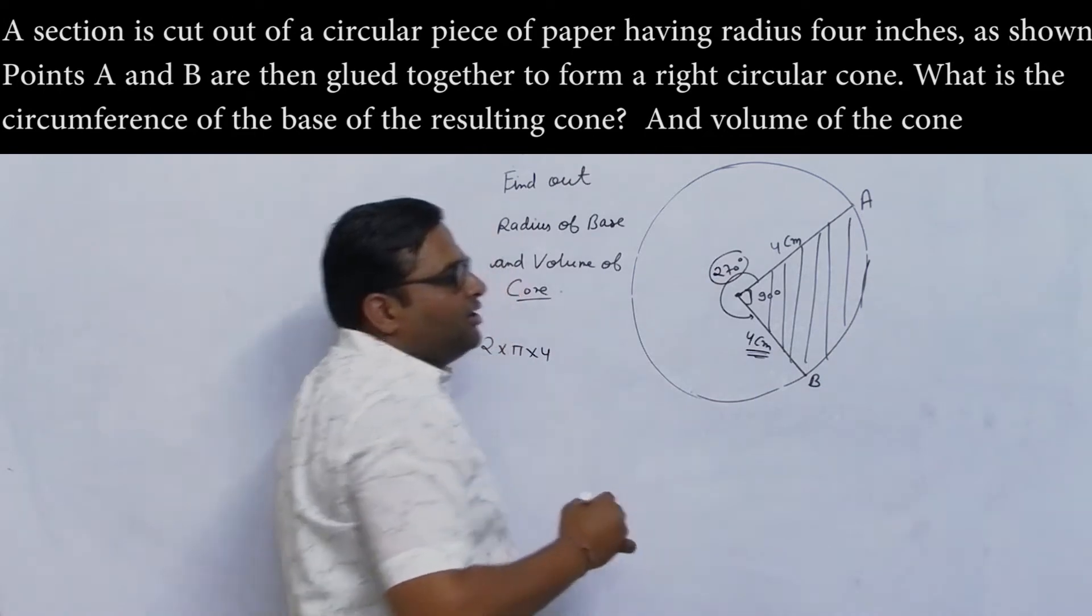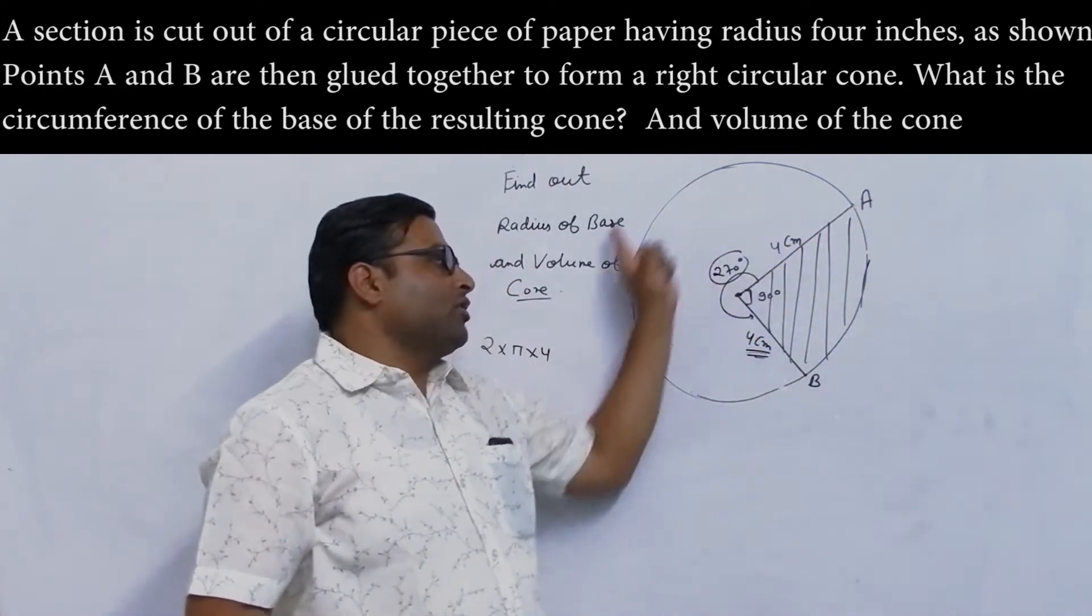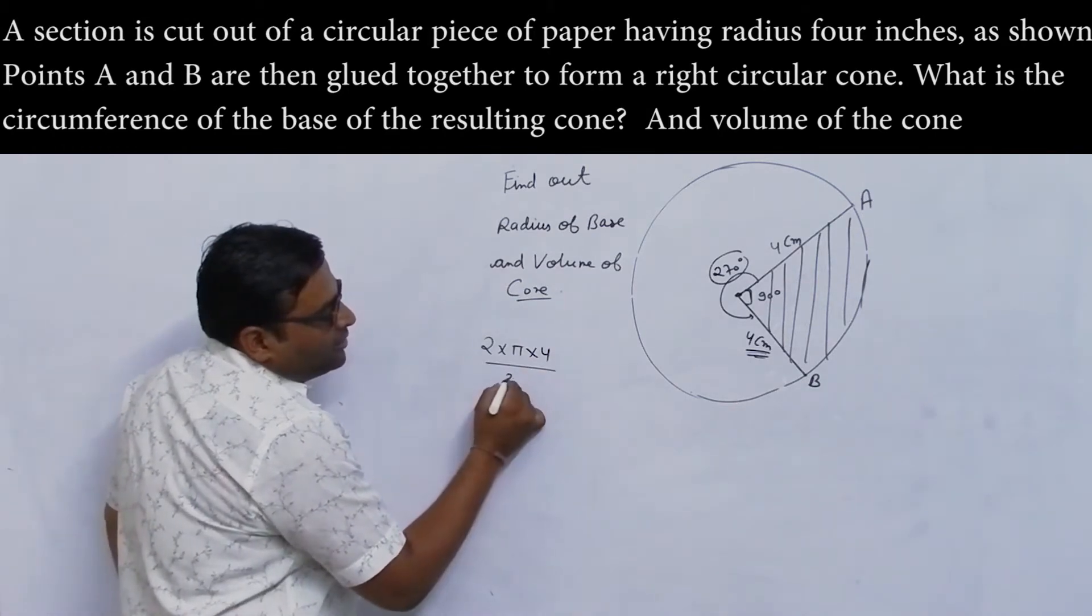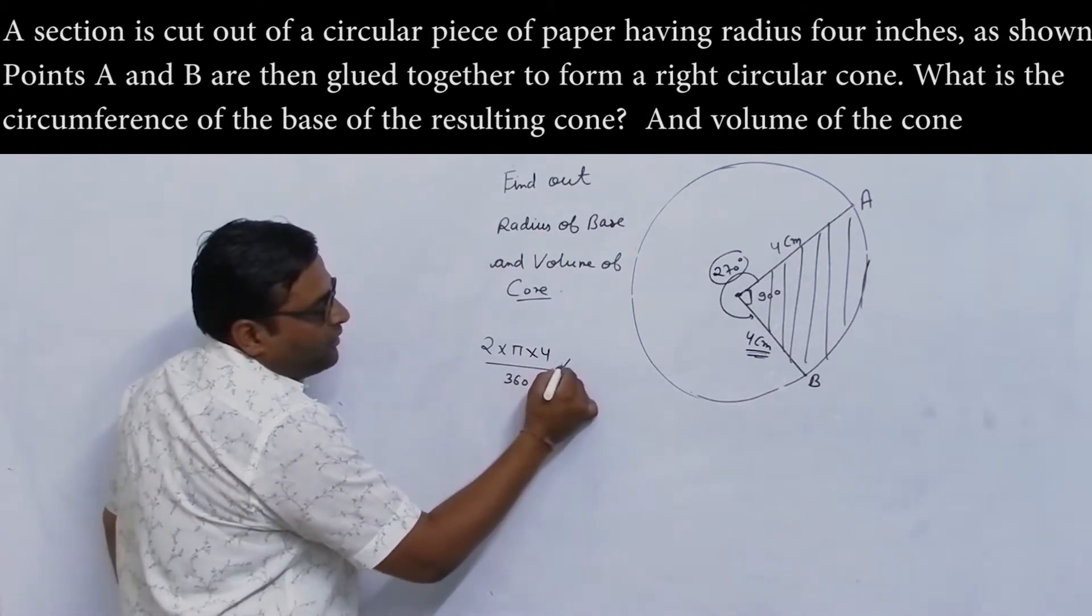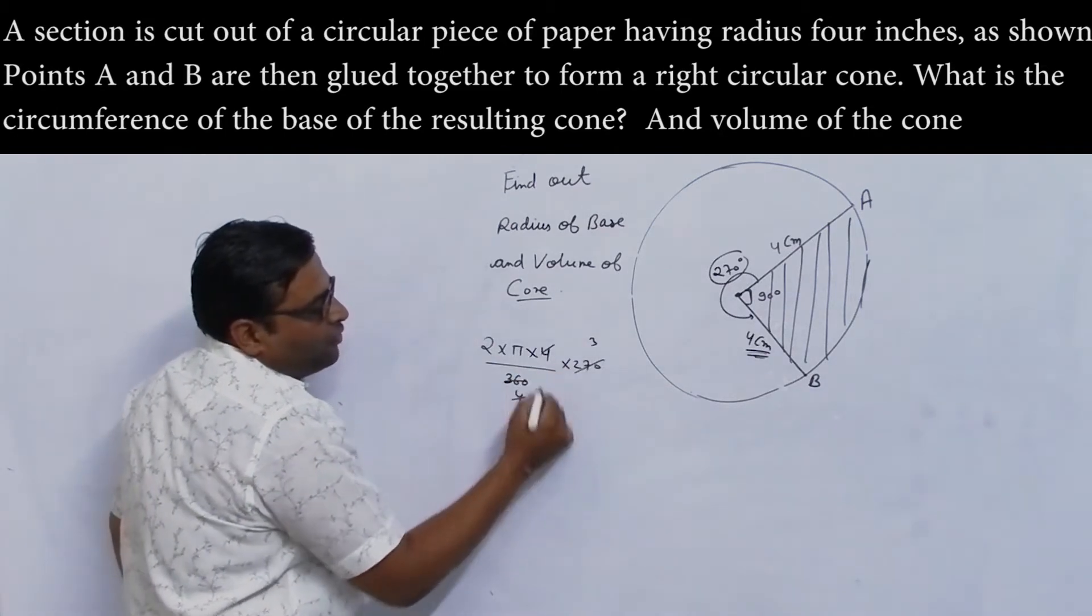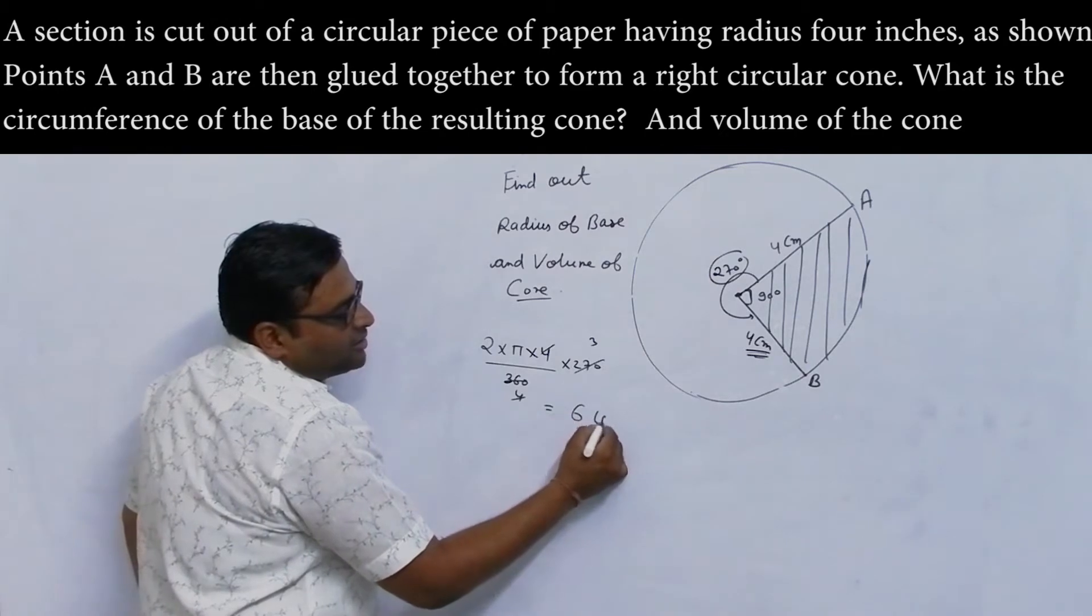270 degrees. So this is 2π(4) times 270 divided by 360. This is 90 times 3, which is 270. This is 4 times. So the arc length is 6π.